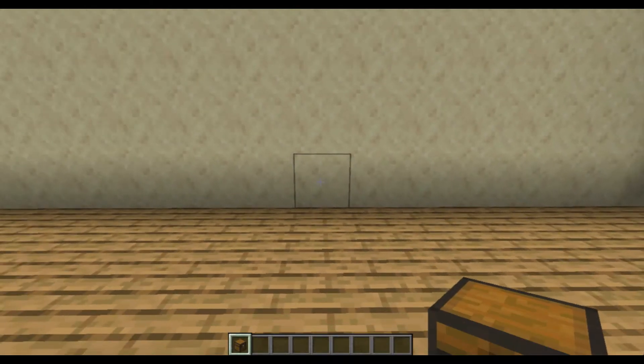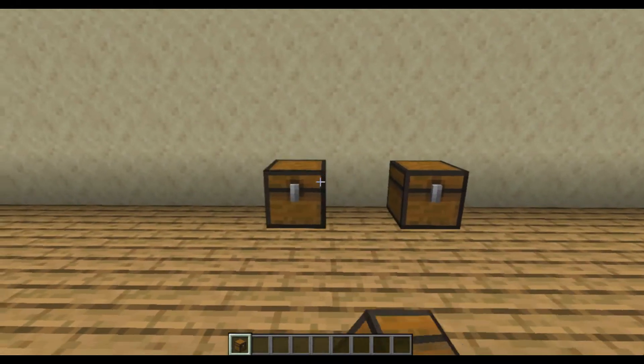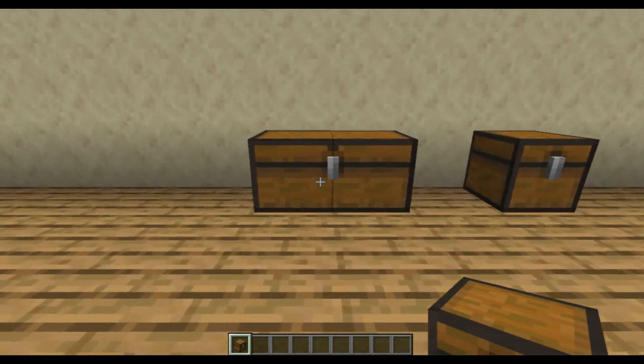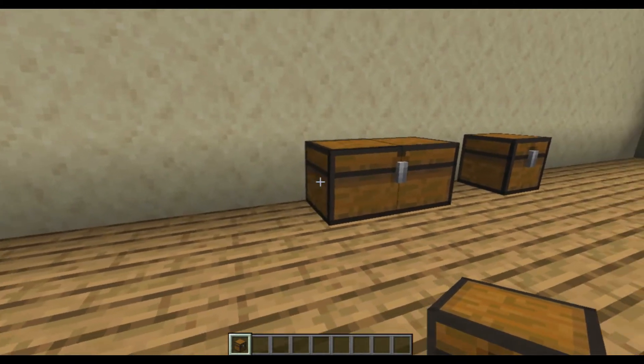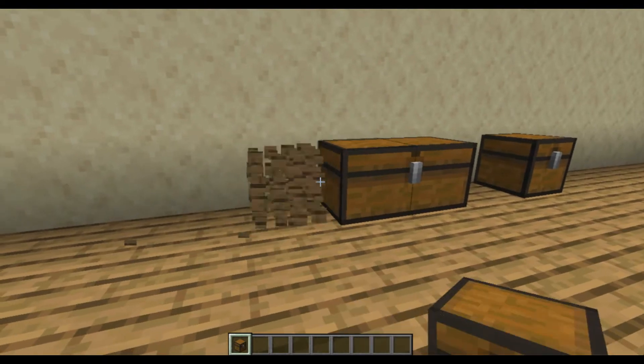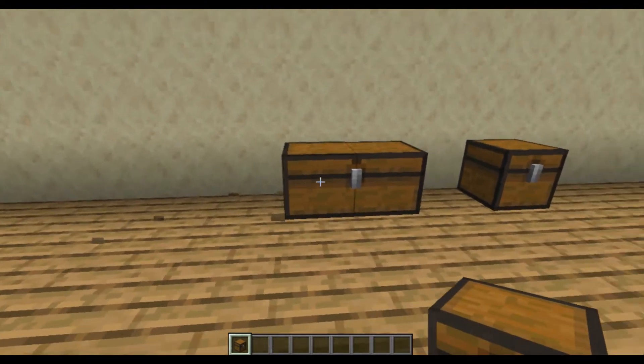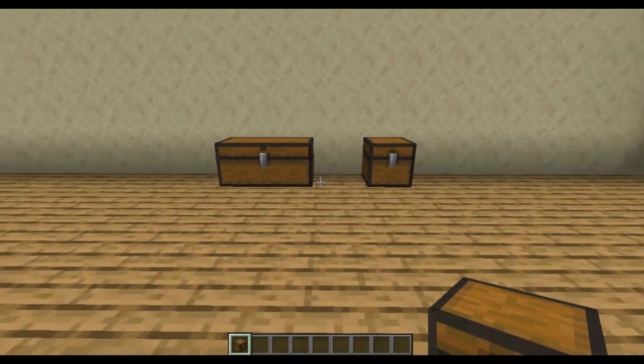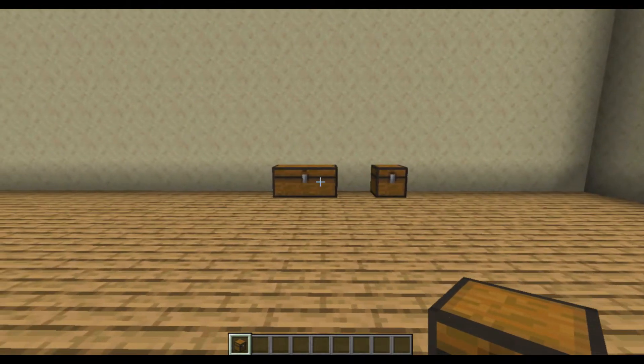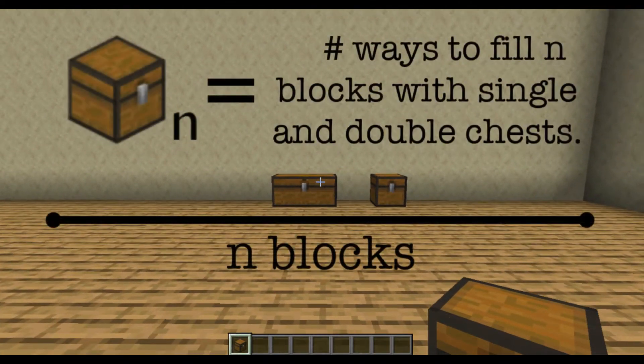In Minecraft, you could place a chest as a single block or a double block. But no matter how hard you try, you can't place a triple block. So the question is, how many ways can you place single and double chests to fill up a row of n blocks?